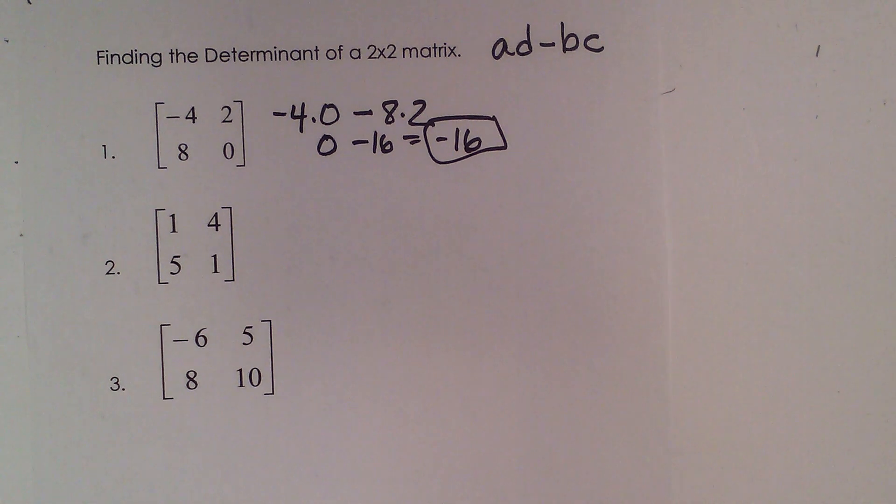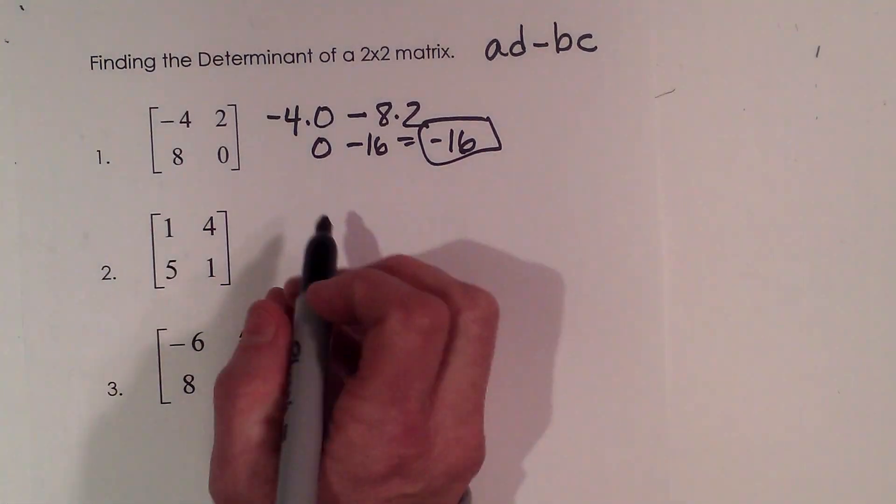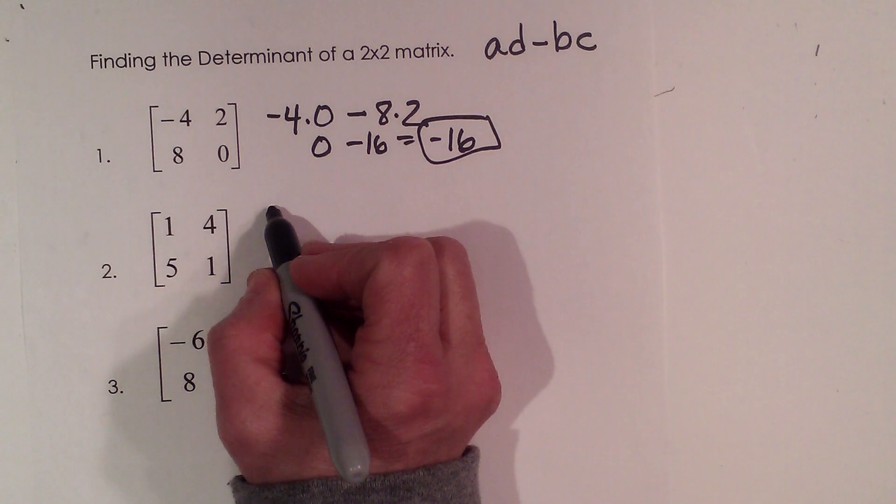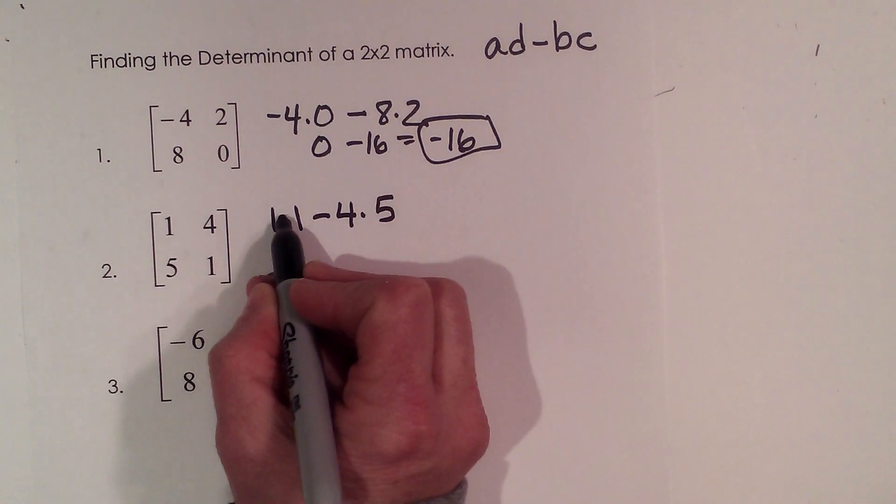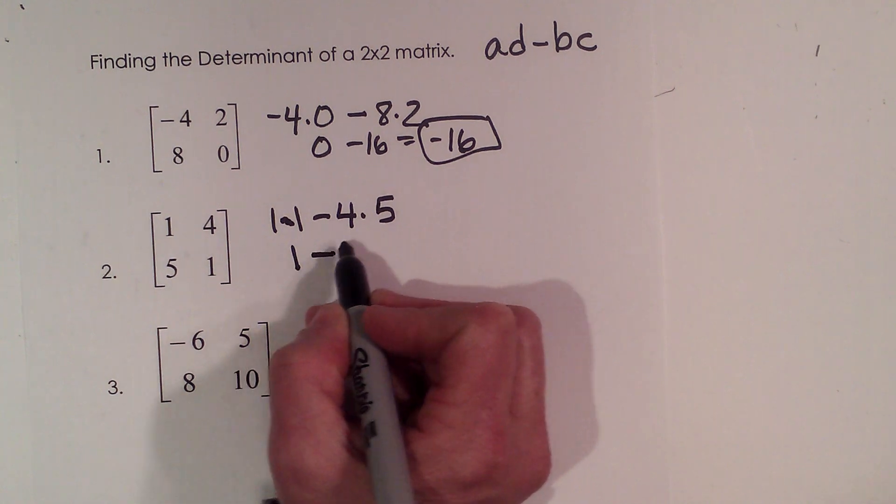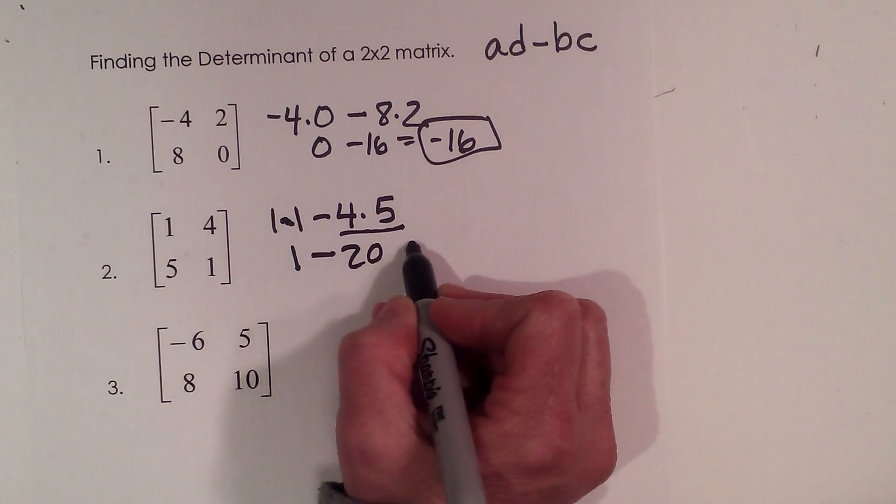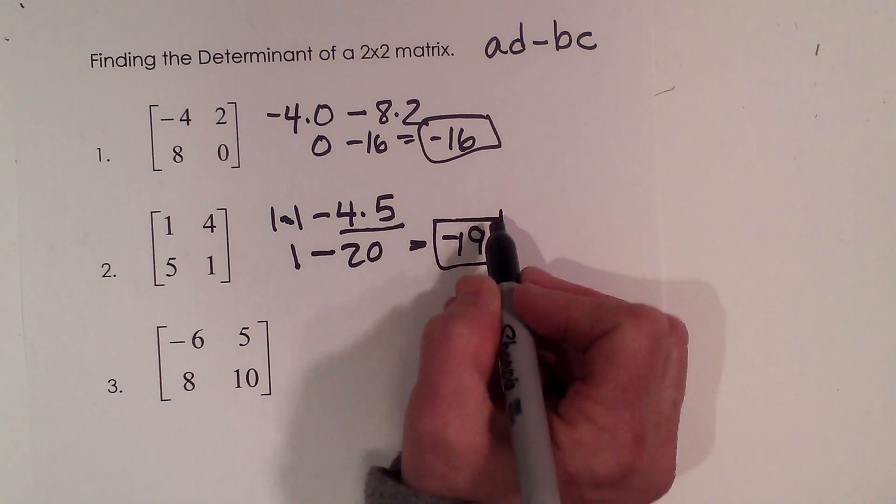So let's practice another one. They're pretty easy. 1 times 1, so a and d are 1 and 1, minus 4 times 5. So 1 times 1 is 1, minus 4 times 5 is 20. So negative 19 is my second determinant.